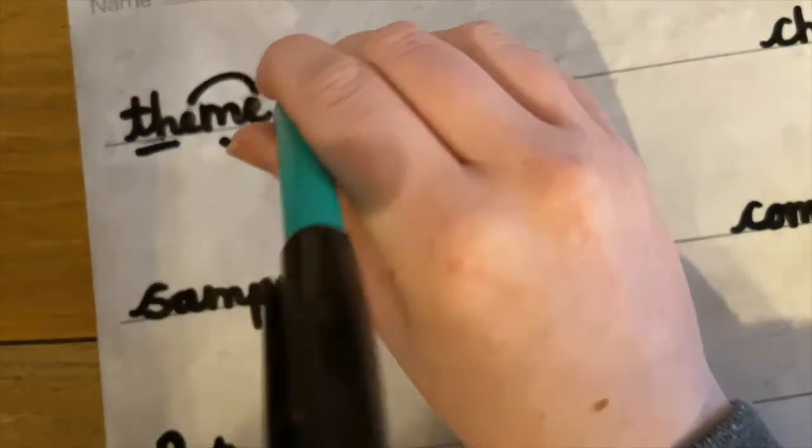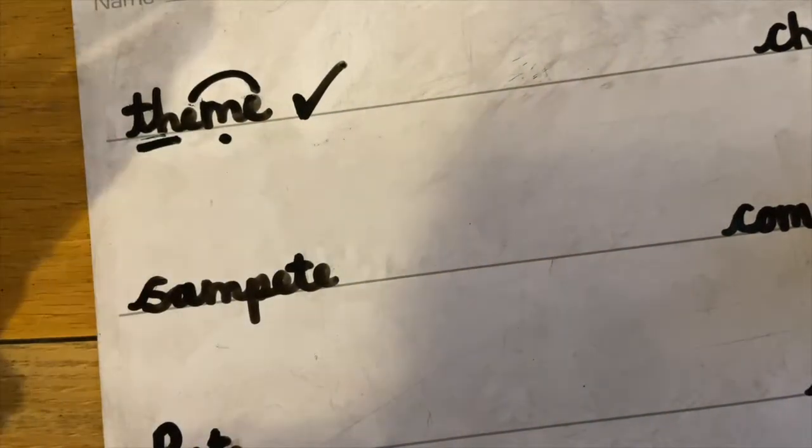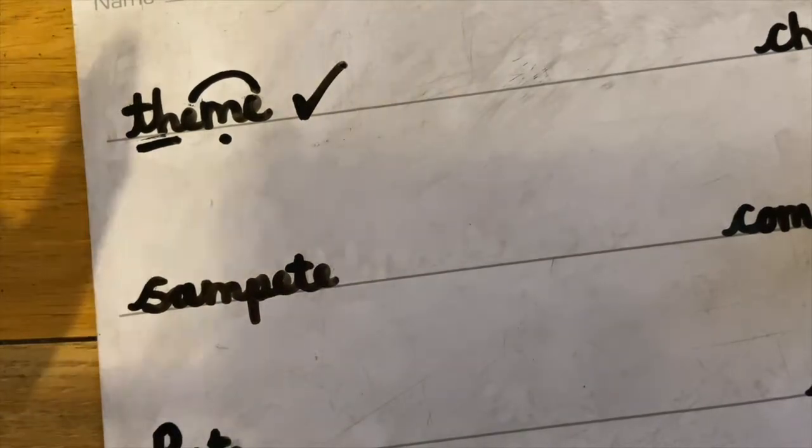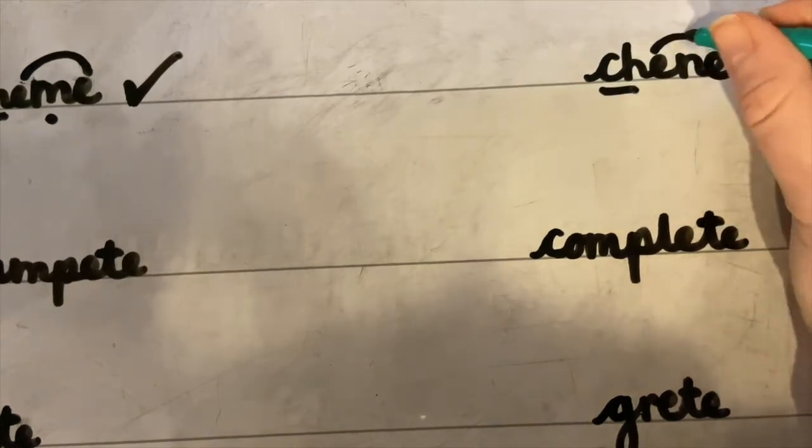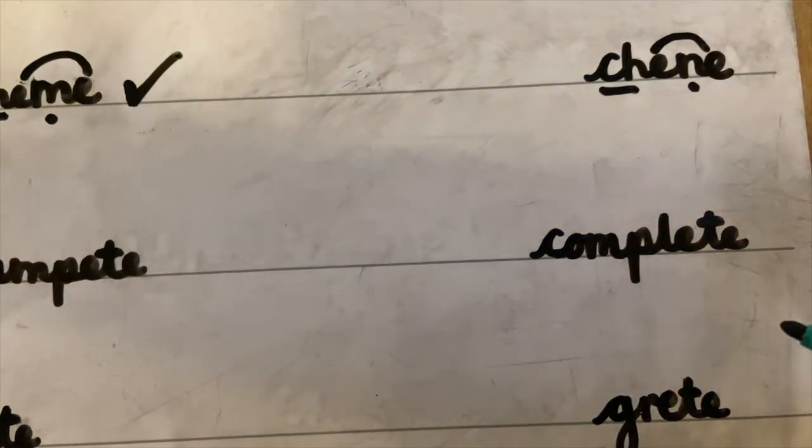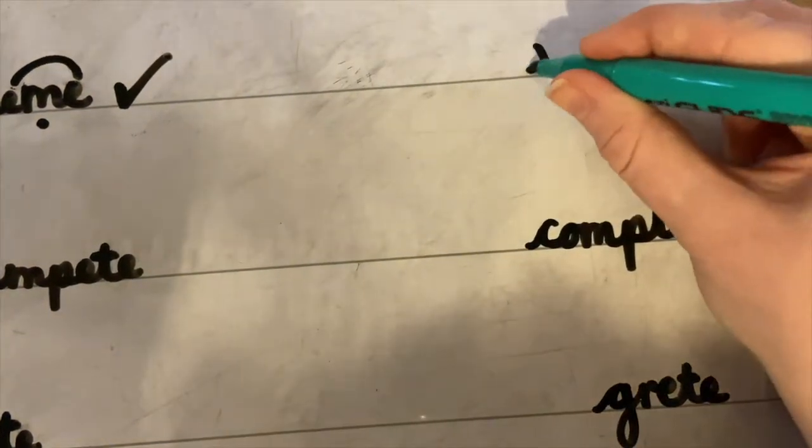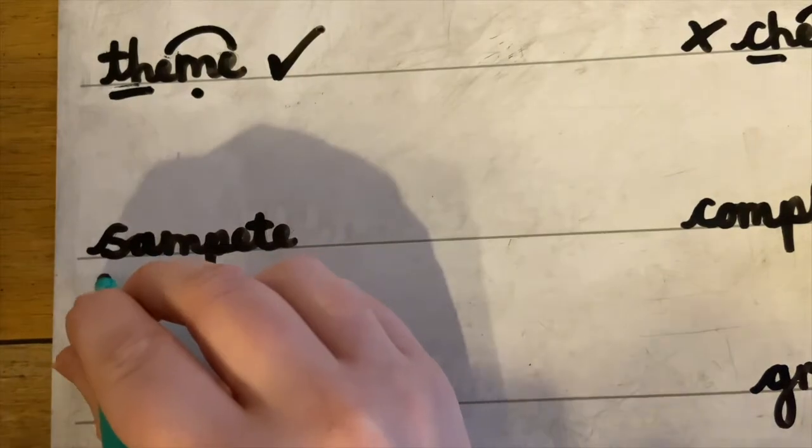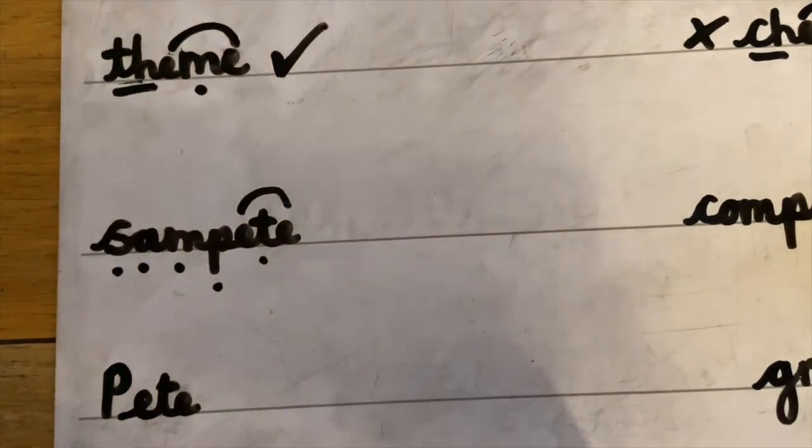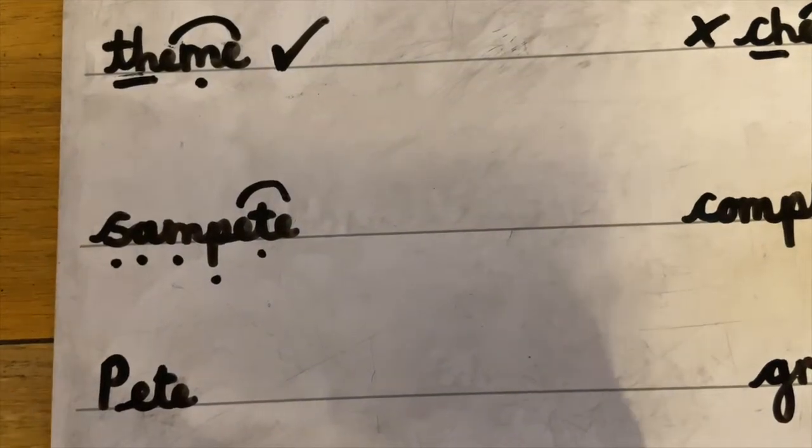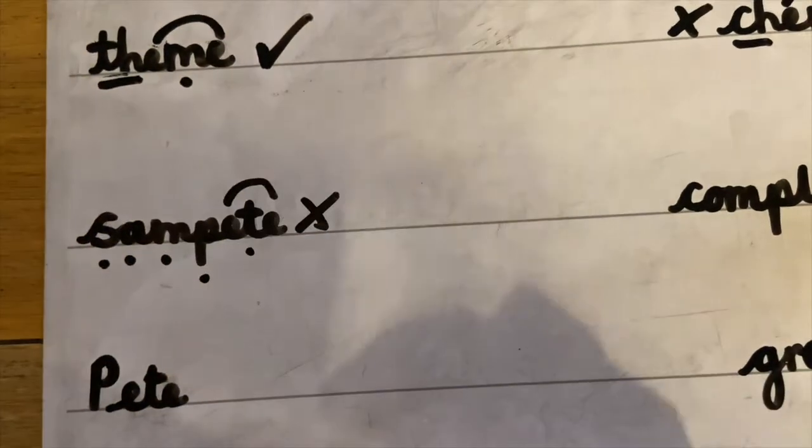Theme, theme is a real word. Theme can be like the theme of a film, so is it a funny film, is it a scary film? Let's go over here. Ch-e-n, teen. What do you think? That's an alien word, it doesn't make any sense. S-a-m-p-e-t, sam pete. What do you think, sam pete? No, that's got to be an alien word.